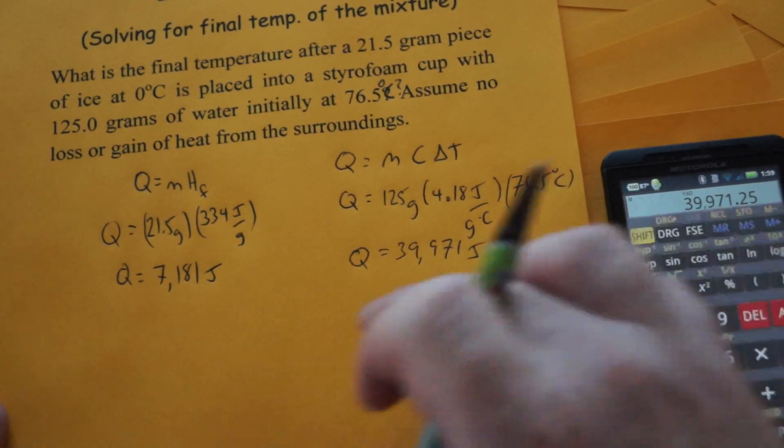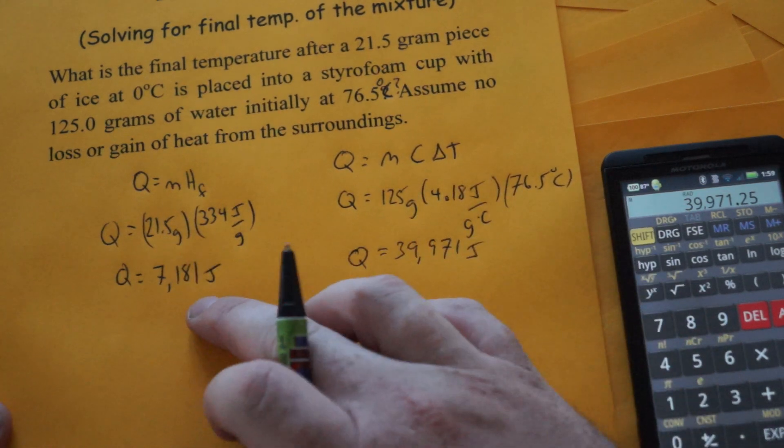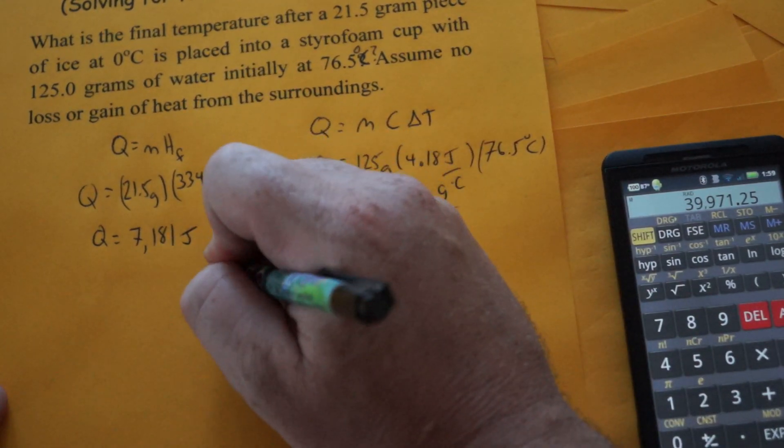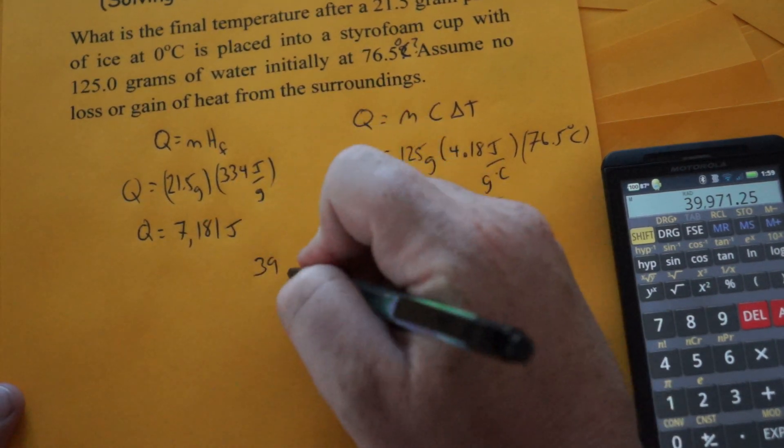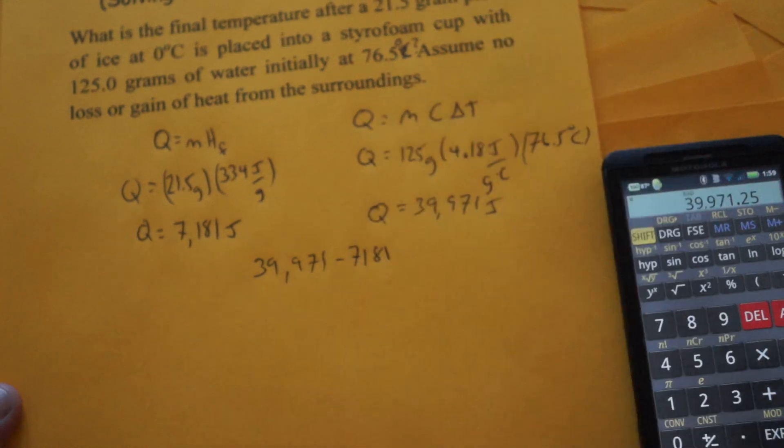So we don't have enough ice here to bring that down to zero. So what's going to happen is the ice is going to completely melt. So what you can do right here is just subtract these two. So 39,971 minus 7,181.